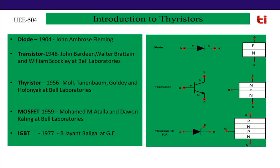Comparing the operating frequency of these four devices — transistor, thyristor, MOSFET, and IGBT — MOSFET is suitable for the highest frequency applications, followed by IGBT, then transistor, and thyristor operates at the minimum frequency, around 200 Hz.